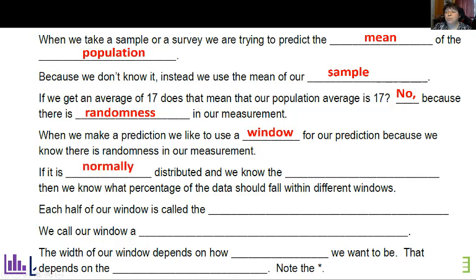Now if our data is normally distributed and we know the standard deviation, so that's the point of the lesson, we're actually going to know this. Then we can know what percentage of data will fall within our window and we're going to call each half of that window our margin of error. So in the example I said, the average miles driven would be 17 plus or minus 2. My margin of error would be 2.